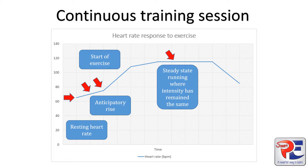What we then find during a continuous session is we will start to get a period where heart rate will start to level out, and we actually call this a plateau. Here we can assume that intensity has remained the same, as there is enough blood containing oxygen being sent to working muscles for energy. So the graph isn't rapidly rising or decreasing — your body is able to deal with the demand of the exercise that you are doing.